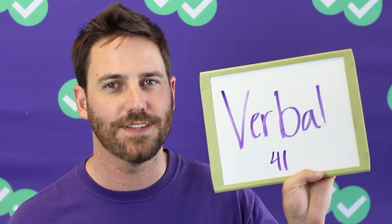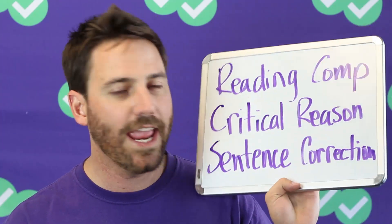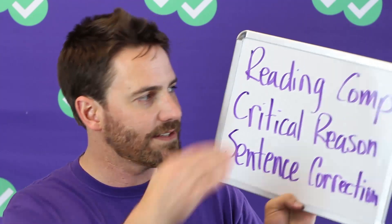The other section you'll see is the verbal section. There are 41 questions in this section and you have 75 minutes for that section as well. You're going to have three different question types in this section: reading comprehension, critical reasoning, and sentence correction. These are going to be evenly dispersed, so you'll have about the same amount for each.